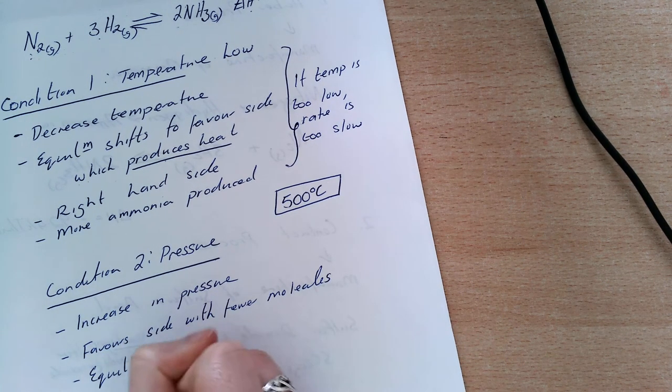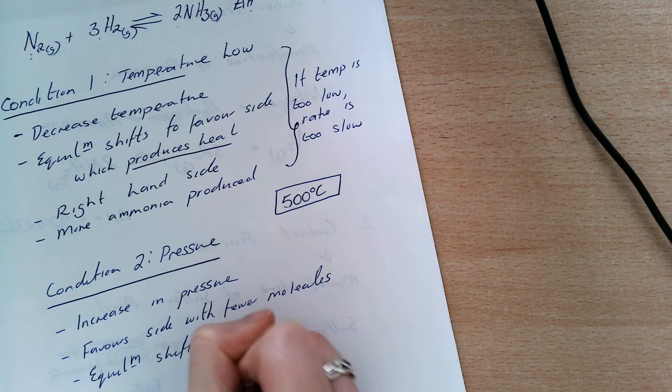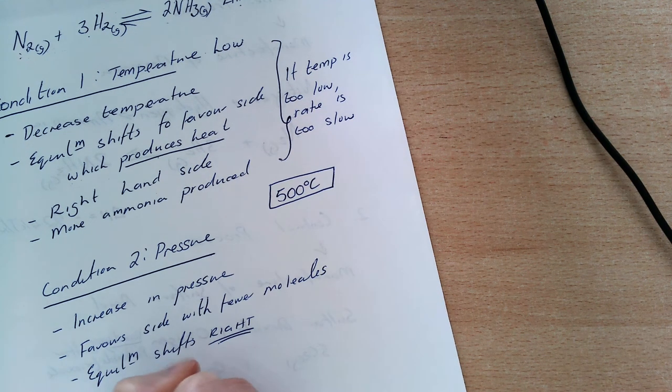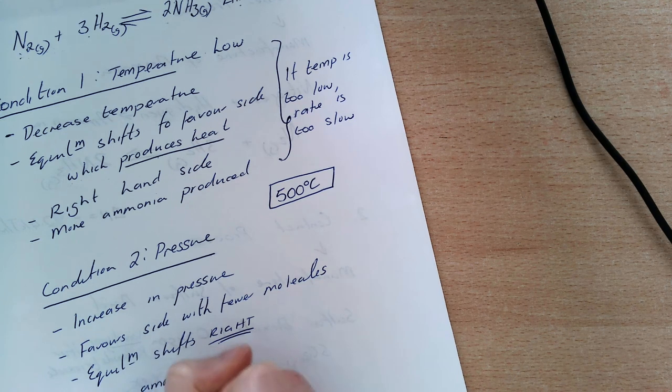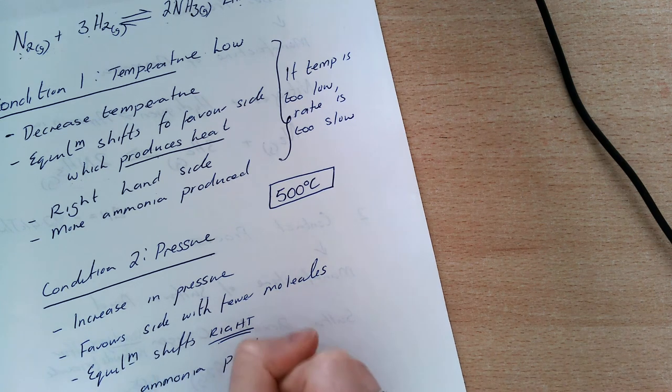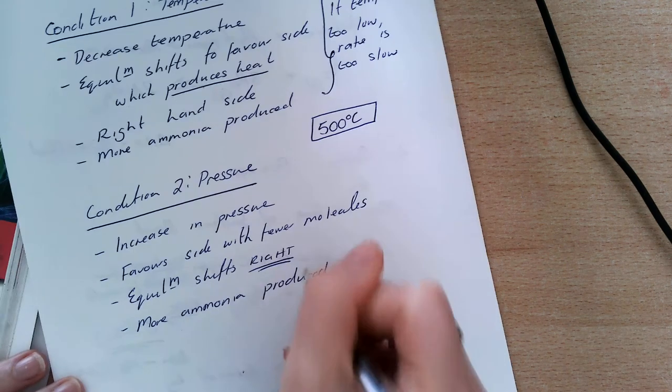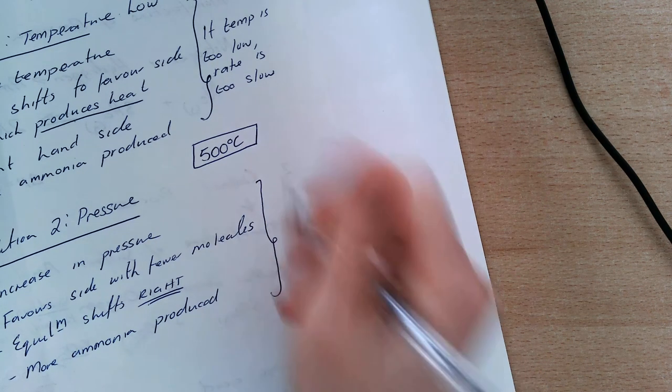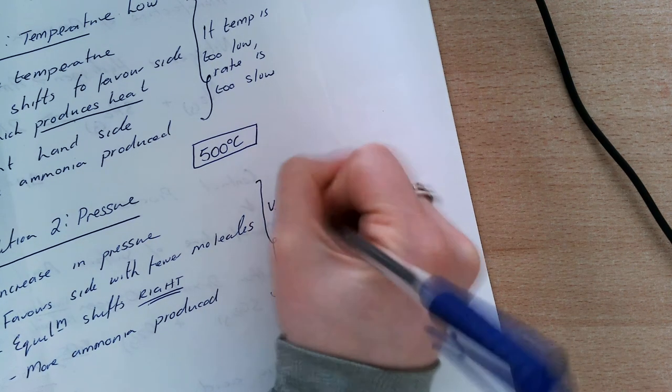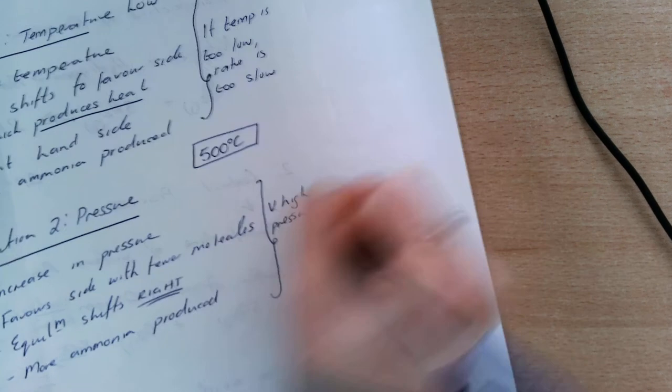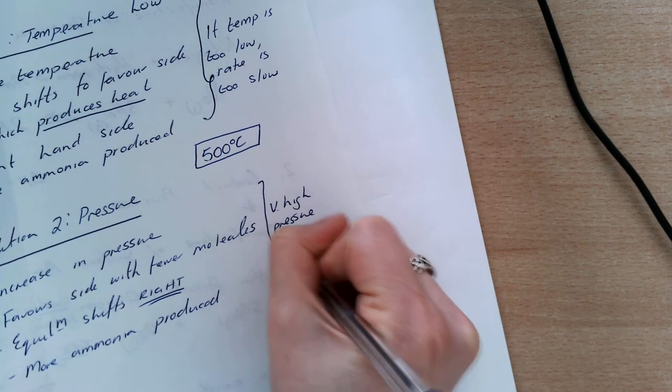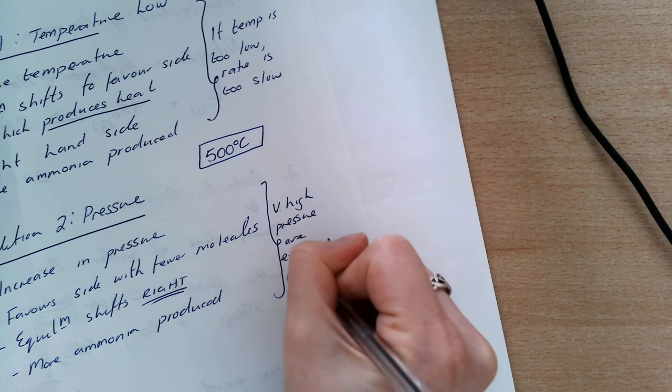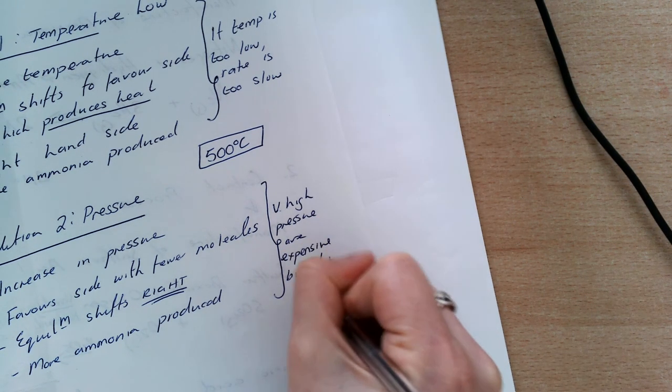So equilibrium shifts right, and that is what I want. I'm happy with that because more ammonia is going to be produced. However, this also has a problem. In practice, very high pressures are expensive to build and to maintain.